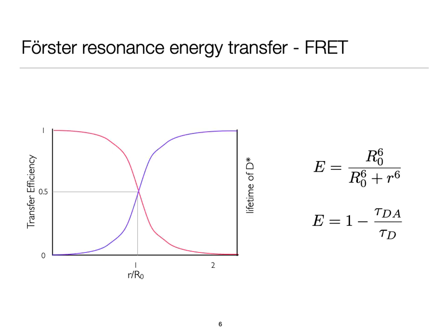If I look at the transfer efficiency and the lifetime, so the transfer efficiency here is this pink line going from high to low. As the separation is very small, as they are on top of each other, my transfer efficiency is 1, and then it drops, and it reaches this point where my transfer efficiency is 0.5. And this is a distance we call the Förster distance, and it's given the symbol R₀.